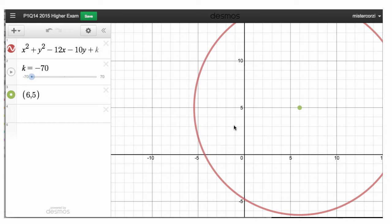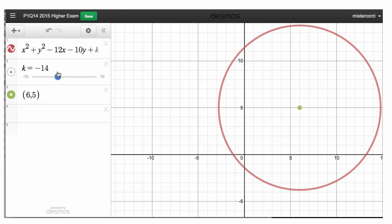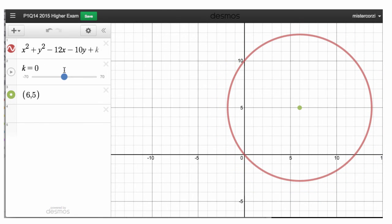Two points of intersection on the x-axis, two on the y-axis. So let's decrease the size of the circle, counting the points of intersection. There's four, there's four, there's four, there's three. And I never mentioned the radius at this point. The radius,